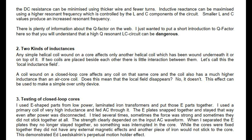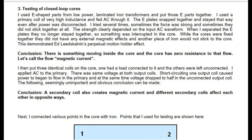Testing of closed loop cores: E-shaped parts from low-power laminated iron transformers were put together. A primary coil of very high inductance was used and AC was fed through it. The E plates snapped together and stayed that way even after power was disconnected. Sometimes the force was strong and sometimes they did not stick together at all — the strength clearly depended on the input AC waveform. When the cores were fixed together they had no external magnetic effects. This demonstrated Ed Leedskalnin's perpetual motion holder effect. Conclusion: there is something moving inside the core and the core has zero resistance to that flow.